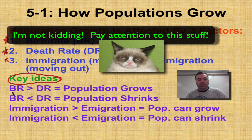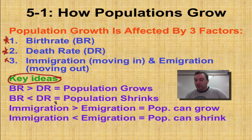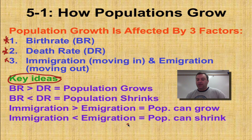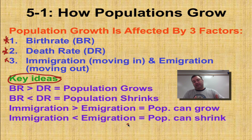Pay attention to these key concepts: if birth rate is greater than death rate, the population will grow; if birth rate is less than death rate, the population will shrink. The same concept applies to immigration and emigration. If immigration is greater than emigration, the population can grow — that's what's happening in the United States right now. If emigration is greater than immigration, the population shrinks, as we see in countries experiencing civil war where large numbers of refugees are leaving.